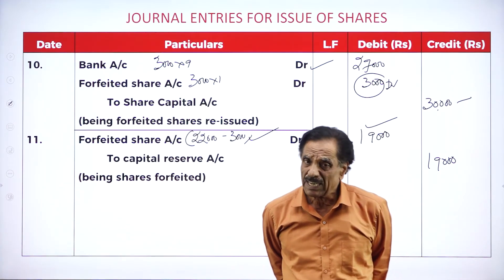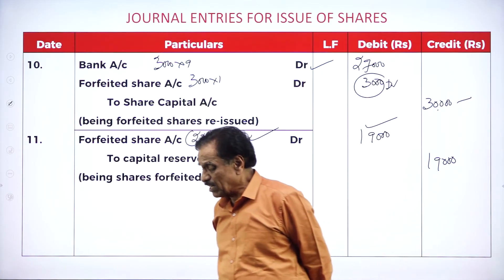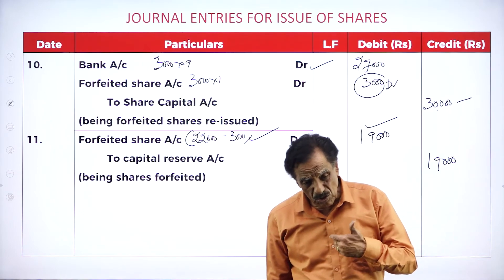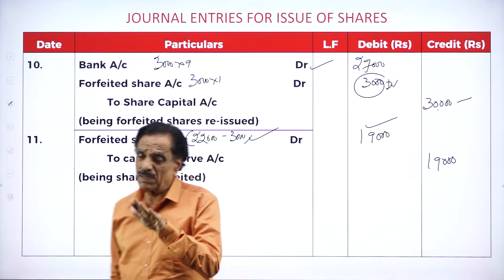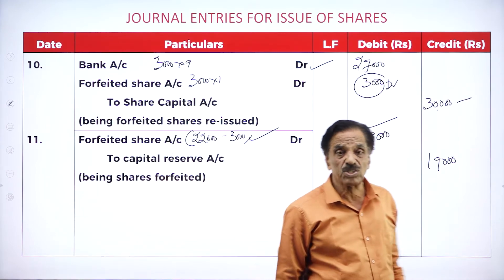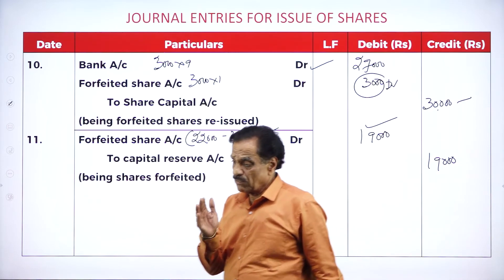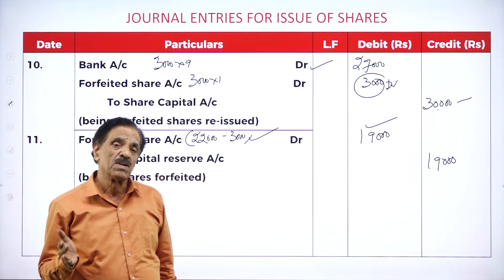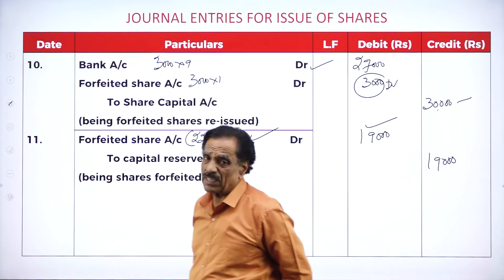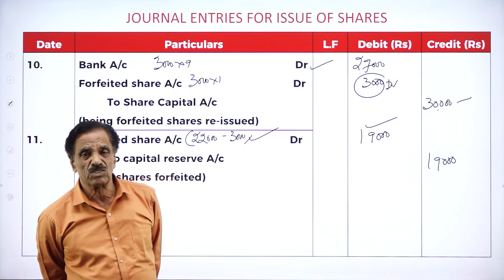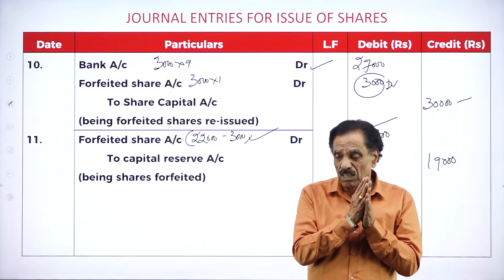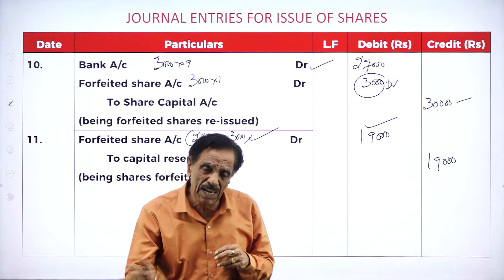All the problems will be asked only on over-subscription. The common entries are: bank account debit to share application account. Next: share application account debit to share capital account, to share allotment account, to bank account. Due entry for allotment: share allotment account debit to share capital, to share premium. Next: bank account debit to share allotment account. Due entry for first call: share first call account debit to share capital account. When you receive: bank account debit to share first call account. Due entry for final call: share final call account debit to share capital account. When you receive: bank account debit to share final call account.